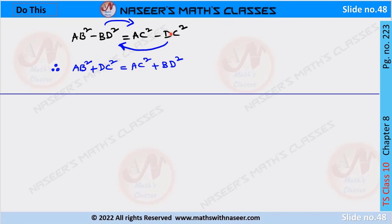Now, transpose minus BD square from LHS to RHS and minus DC square from RHS to LHS. We can write it as AB square plus DC square is equal to AC square plus BD square. Hence, this is the required proof.